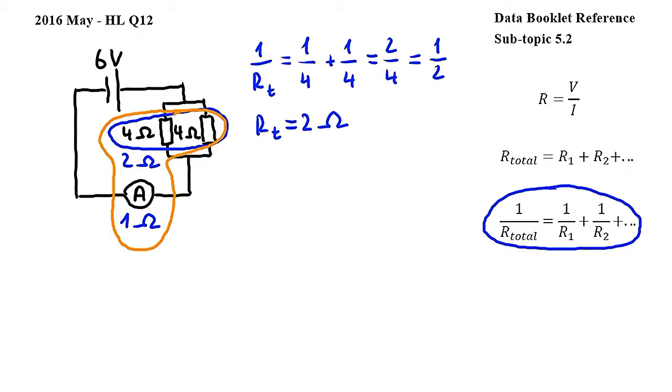Let's combine now this 2 ohm resistance that we found and the 1 ohm resistance of the ammeter. Since these resistances are in series, we will use this equation also from subtopic 5.2. Here R total is the combined resistance of the resistors, R1, R2 and so on are the individual resistances. So substituting into this equation we get R total equals 1 ohm plus 2 ohms, which gives us 3 ohms for the combined resistance of the circuit.